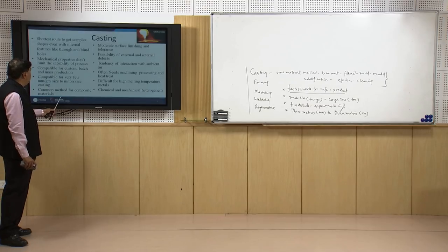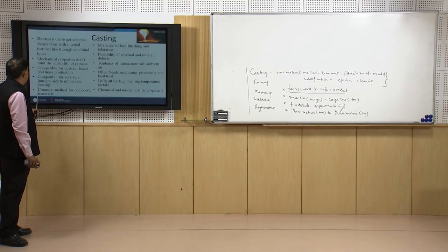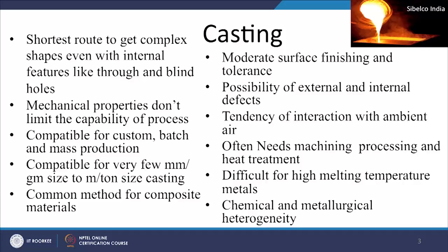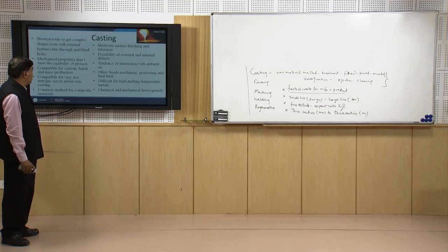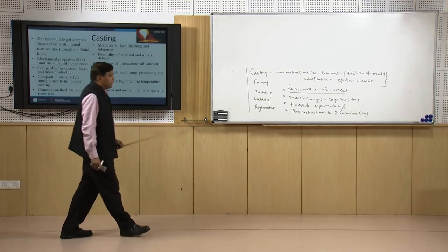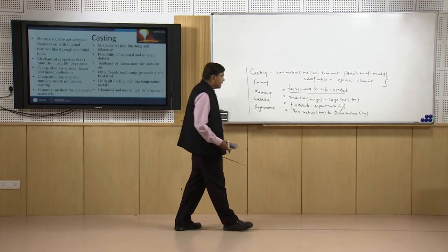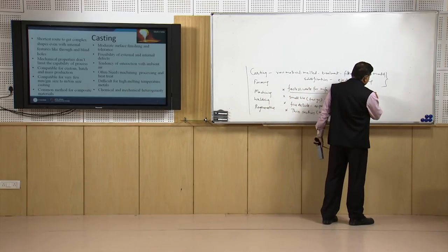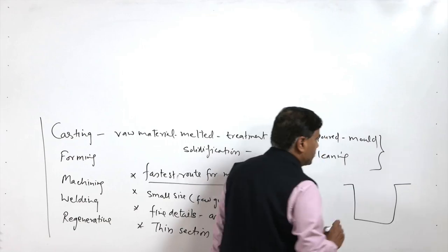The process is compatible for very fine dimensions to very large size dimensions — components may be of very small size in millimetres or sections may be of very large size in meters or in tons. Casting is also a common method for making composite materials, such as stir casting or rheocasting, which is one route where casting is used for preparing composite materials.